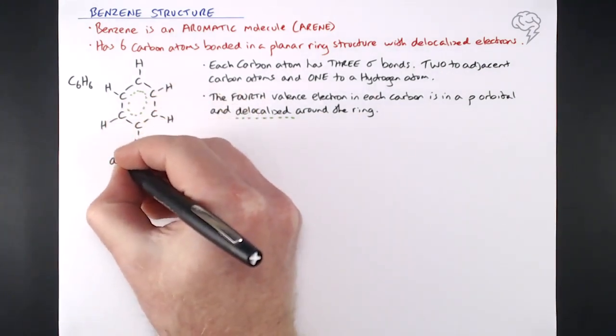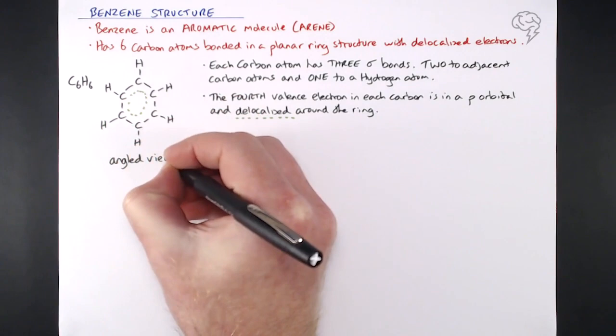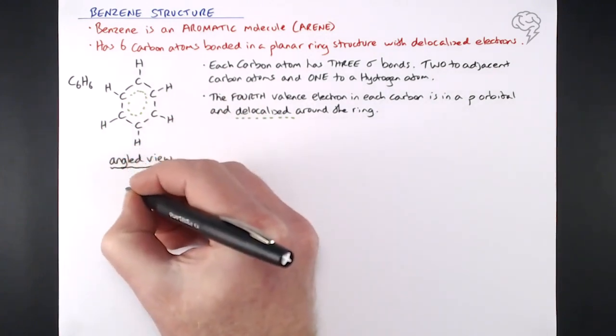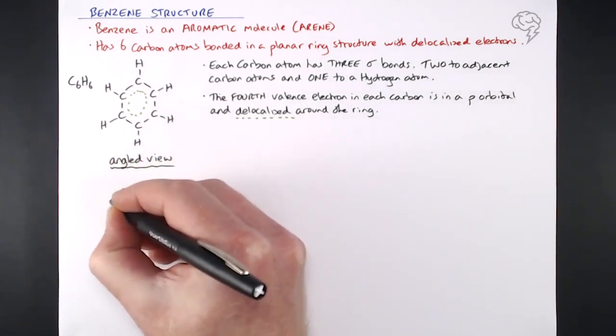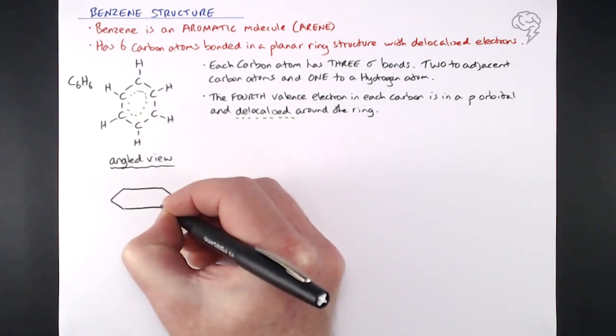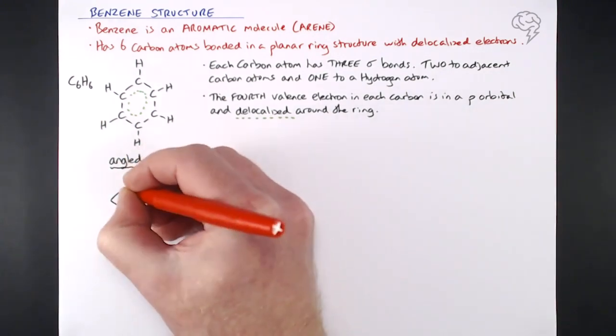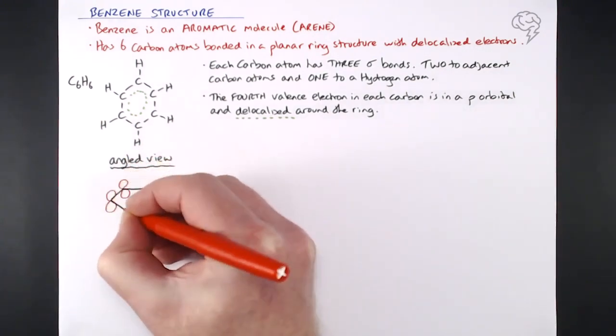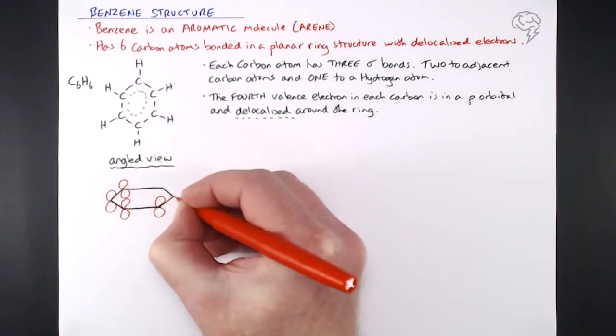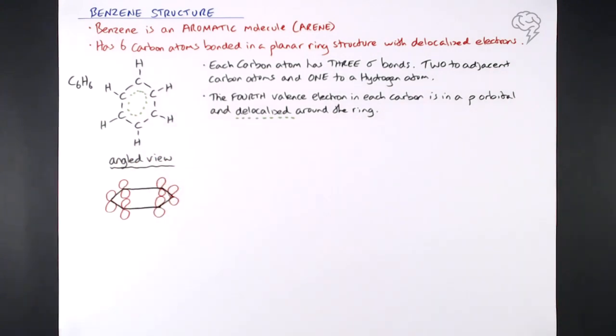So if we look at an angled view, so maybe if you think, imagine you're looking at the benzene ring from the side, but then lift your head up, you're kind of looking at it from an angle from the top, we see this carbon ring structure and each of those p orbitals that these valence electrons, this fourth valence electron is in.